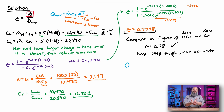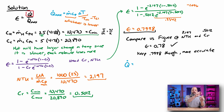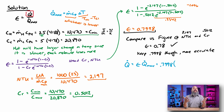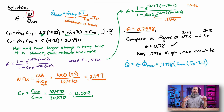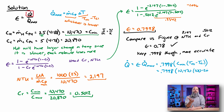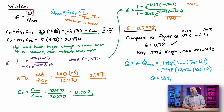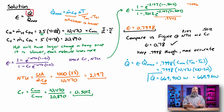Going back to the first equation: Q_dot equals effectiveness times Q_dot_max. With effectiveness of 0.7998 — about 80% effective — and Q_dot_max equal to C_min times delta_T_max (10,470 times 80), Q_dot = 669,900 watts. That's a high value, which makes sense since we had a medium-to-large NTU and counterflow double pipe heat exchangers are the most effective design.